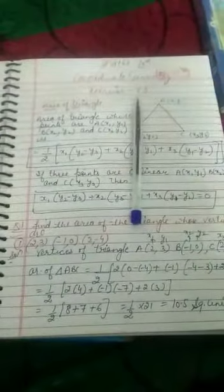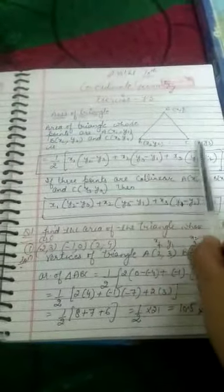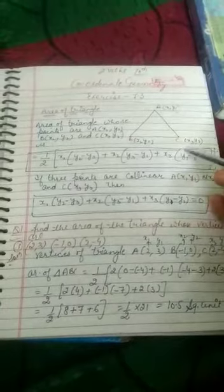Area of triangle we know is equal to half into base into height, but there is a difference because there are 3 points and all 3 points have different vertices. Point A has x1, y1, B has x2, y2, and C has x3, y3.